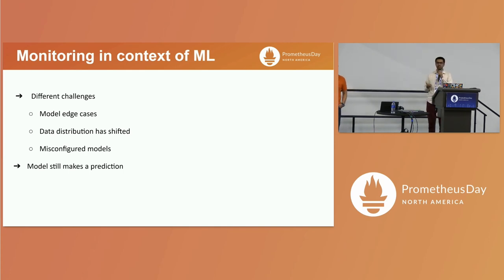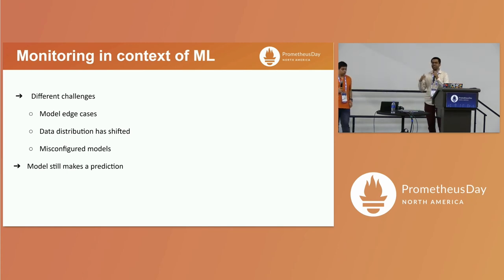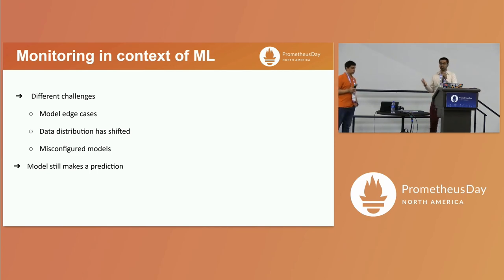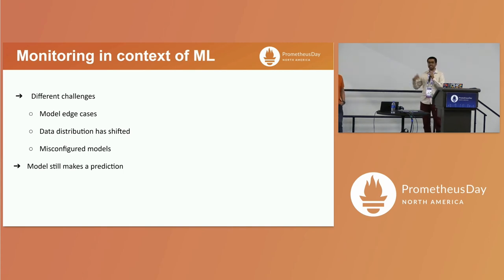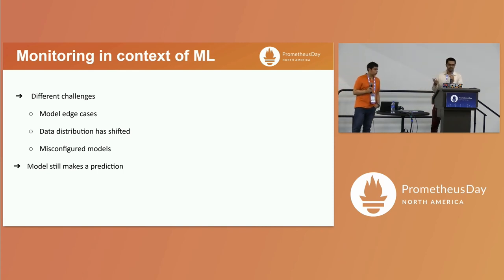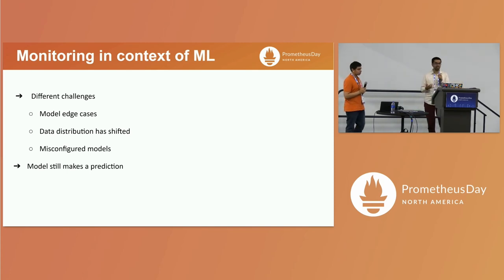Once you productionize your model, there are a lot of hidden variables that might prop up. When working with production data, you might run into edge cases where the model doesn't perform well. Over time, the data distribution on which the model was originally trained may shift. We have two terms for this in the ML ecosystem: concept drift and data drift. There could also be situations where a model isn't configured properly — it still makes a prediction, but not always a good one, so we want to monitor that the prediction rate doesn't go down.